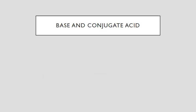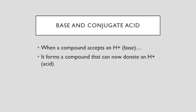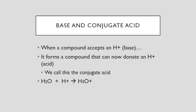It works the same way with bases and conjugate acids. When a compound accepts a proton — which is a base according to Brønsted-Lowry — it then forms a compound that has the ability to donate a proton, which would make it act like an acid. That species formed is called a conjugate acid. When a Brønsted-Lowry base accepts a proton, it forms a conjugate acid. In our water example, water is acting as a base because it accepts the proton, and then it forms H₃O⁺, which is the conjugate acid.